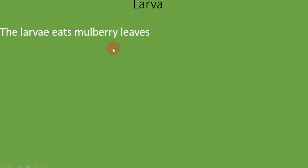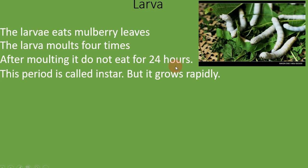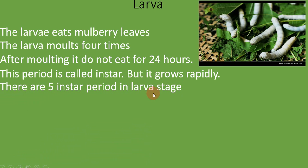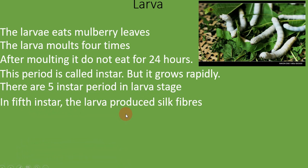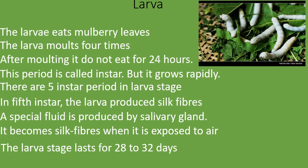The larva eats a lot of mulberry leaves. The larva molts four times in the larva stage; after molting, it does not eat for 24 hours — this period is called the instar period, but it grows rapidly at that stage. There are five instar periods in the larva stage. In the fifth instar, the larva produces silk fiber. A special fluid produced by the salivary gland of the larva becomes silk fiber when exposed to air. The larva stage lasts for 28 to 32 days, making it the longest period of the life cycle.